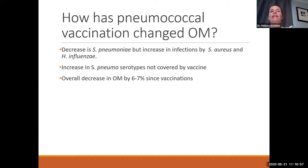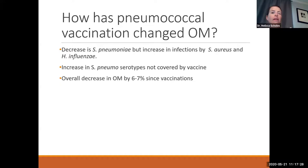Vaccination is important because we are expanding our pneumococcal coverage with recent generations. Initially there was a decrease in strep pneumo after vaccination became commonplace, but there's been an increase in infections by staph aureus, H. flu, and strep pneumo serotypes not covered by vaccines. Overall, there's been about a 6 to 7% decrease in otitis media since vaccination, so there's been a minor effect, but still a lot of infections per year.